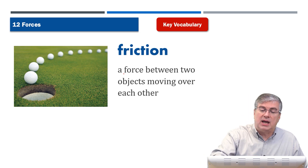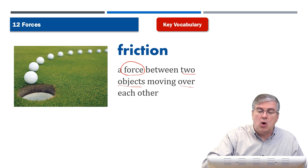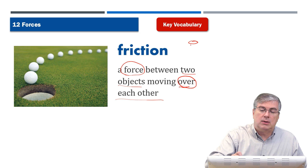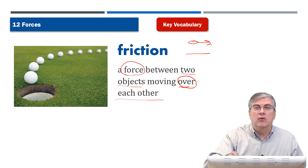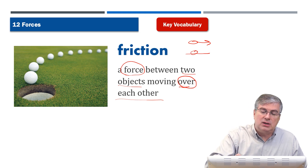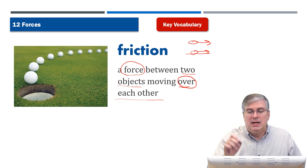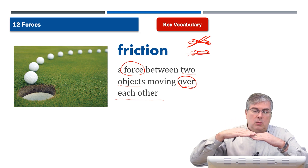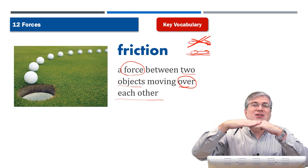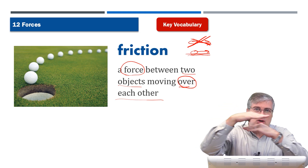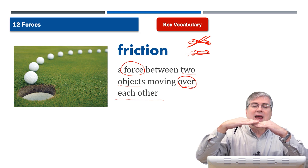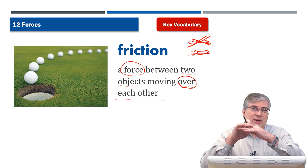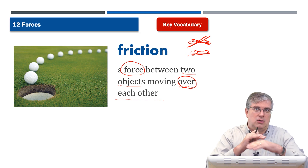Next we have friction. Friction is another type of force — it's a force between two objects moving over each other while touching. If an object is moving over the ground and touching it, you have friction. Like a golf ball rolling over grass: as it's moving, it has friction and it's slowing down because it's actually touching the grass. If the objects are not touching, there's no friction.